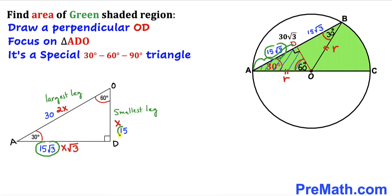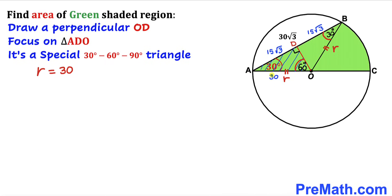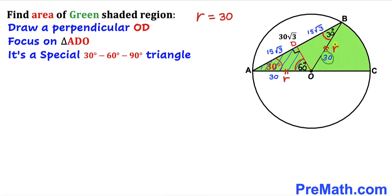So the smallest leg equals 15 and the largest leg equals 30. Therefore AO — which is the radius — turns out to be 30 units. Since OB is also a radius, OB equals 30 units as well.